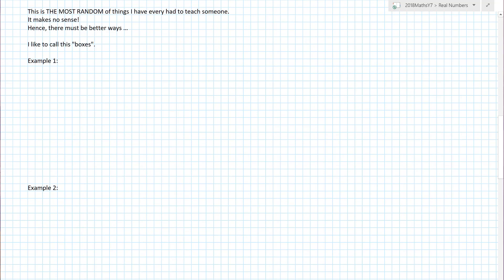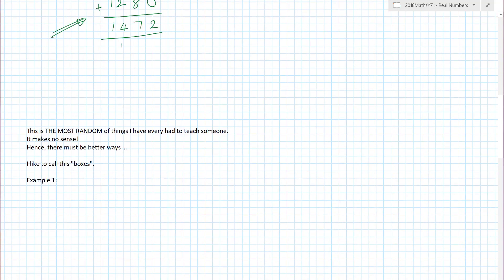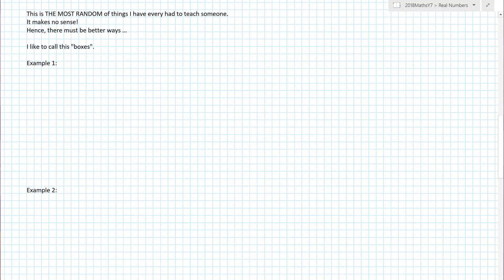I now know that 32 times 46 is equal to 1,472. That has to be the most random thing I have ever had to teach someone. It makes absolutely no sense. I went to a course once with a really awesome math teacher, and he was like, why do we keep teaching everyone in year 6 and 7 this random method here? It makes no sense. We know that actually we can split it up into a different thing.